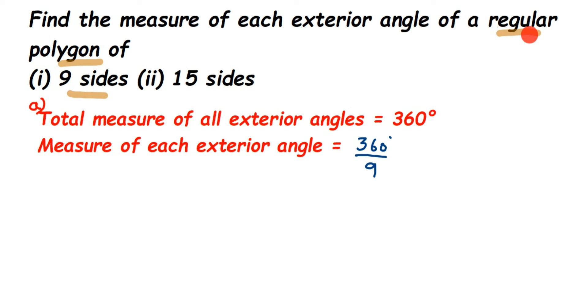Then this will be equal to, we can cancel this in the 9 table. 9 times 4 is 36 and then followed by 0, 40. So each exterior angle will be equal to 40 degrees. That's it.